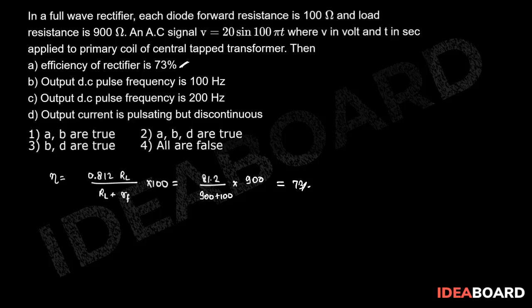Output DC pulse frequency = 2 × frequency of AC = 2 × 50 Hz = 100 Hz. So statement (b) is also correct.